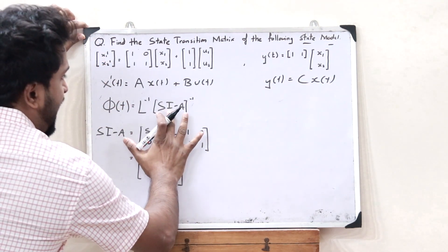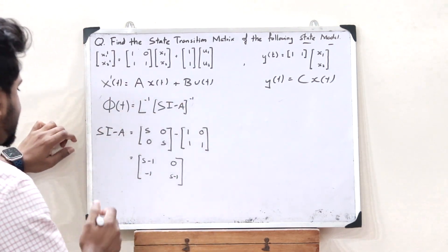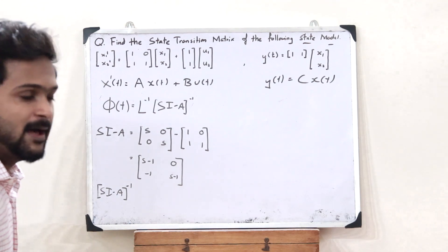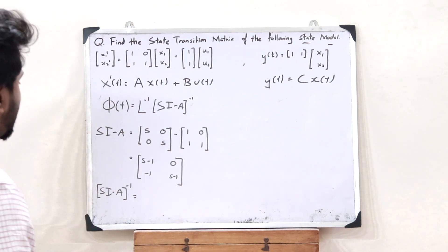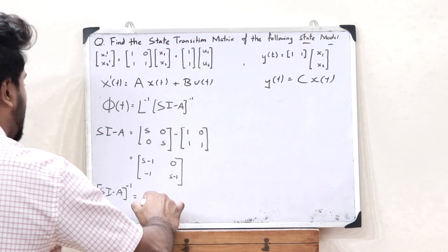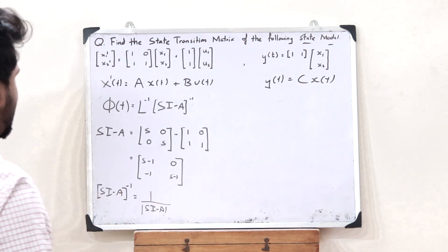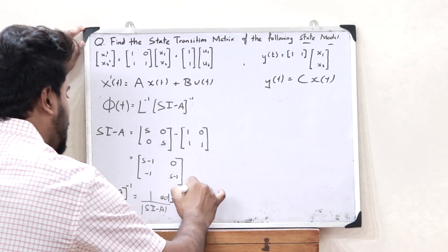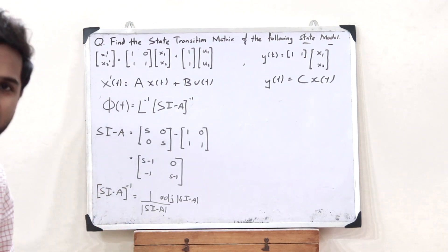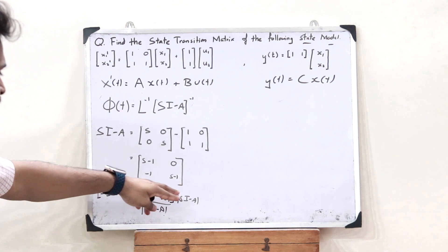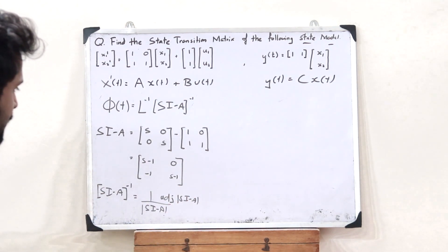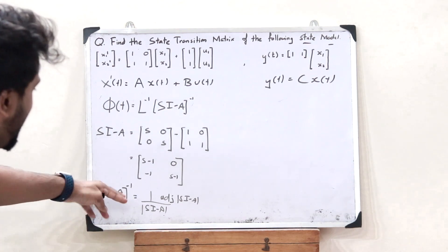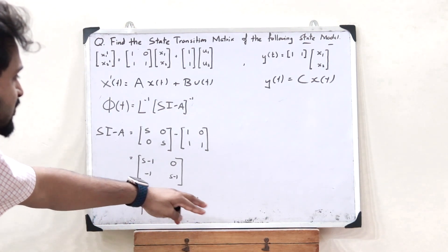Next we have to find (sI - A)^-1. This is given by the formula from 12th standard mathematics: the inverse of a matrix is 1 divided by the determinant of the matrix, multiplied by the adjoint of the matrix. So (sI - A)^-1 = (1 / det(sI - A)) · adj(sI - A).